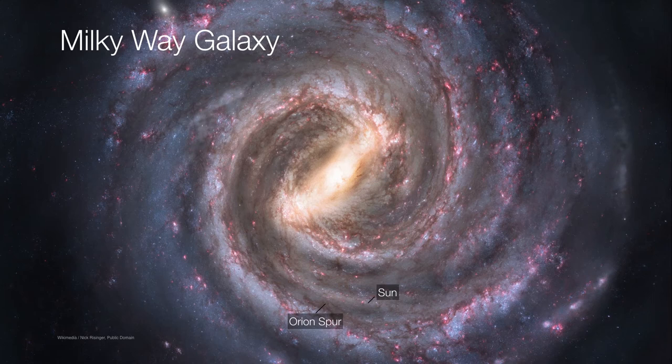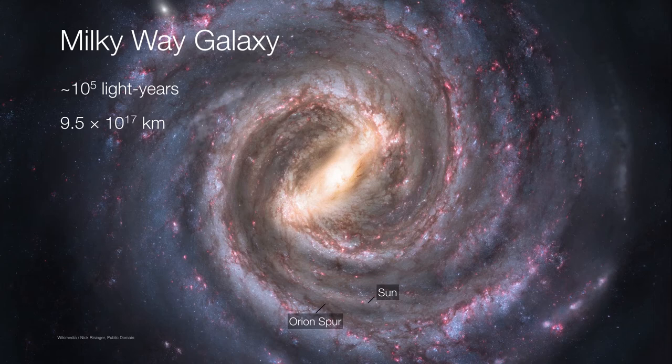And it's home to about 400 billion suns, and has a diameter of about 100,000 light years across. So this is a massive jump from the interstellar neighborhood — three orders of magnitude — taking us all the way up to 9.5 times 10 to the 17th kilometers, or about 32.6 kiloparsecs in diameter.